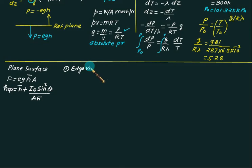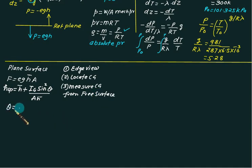Solving the problem you first draw the edge view. Second step, locate your CG position on edge view. Third step, measure the distance of CG from free surface level. That will give you value of h bar. And then you can calculate force and CCP. In this equation theta is the angle made by the edge view and not by the true shape. So always remember to draw the edge view and then measure the angle with the free surface level.